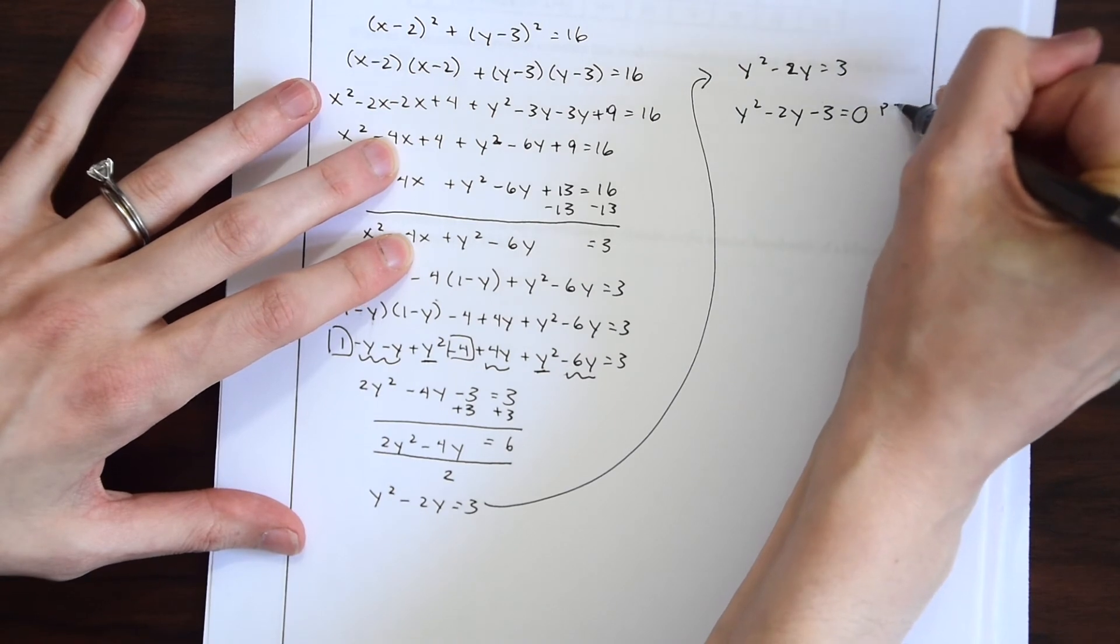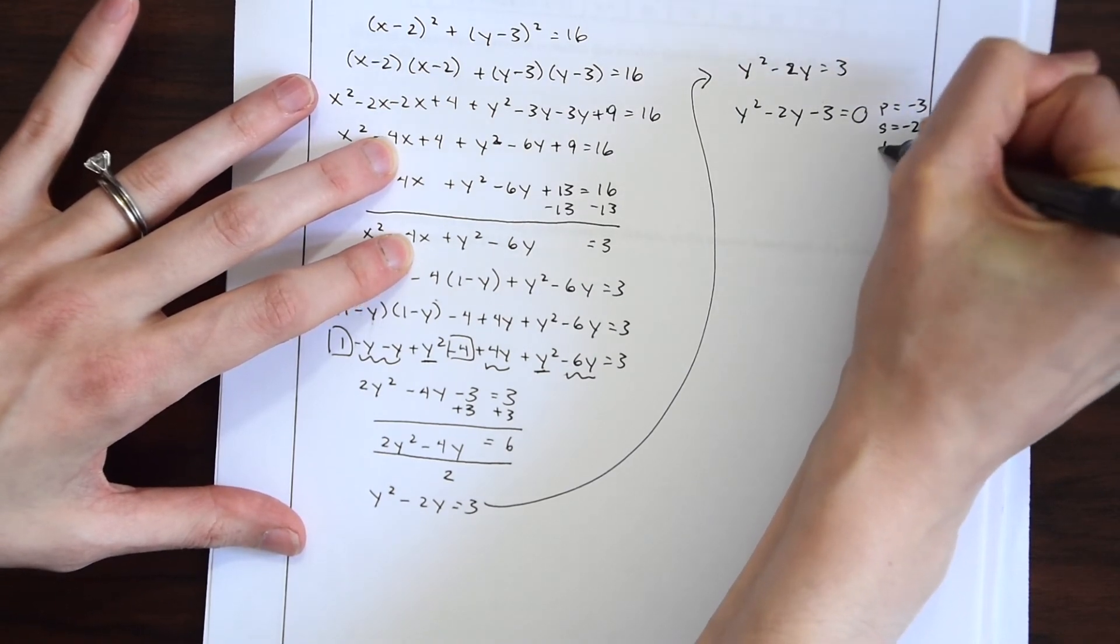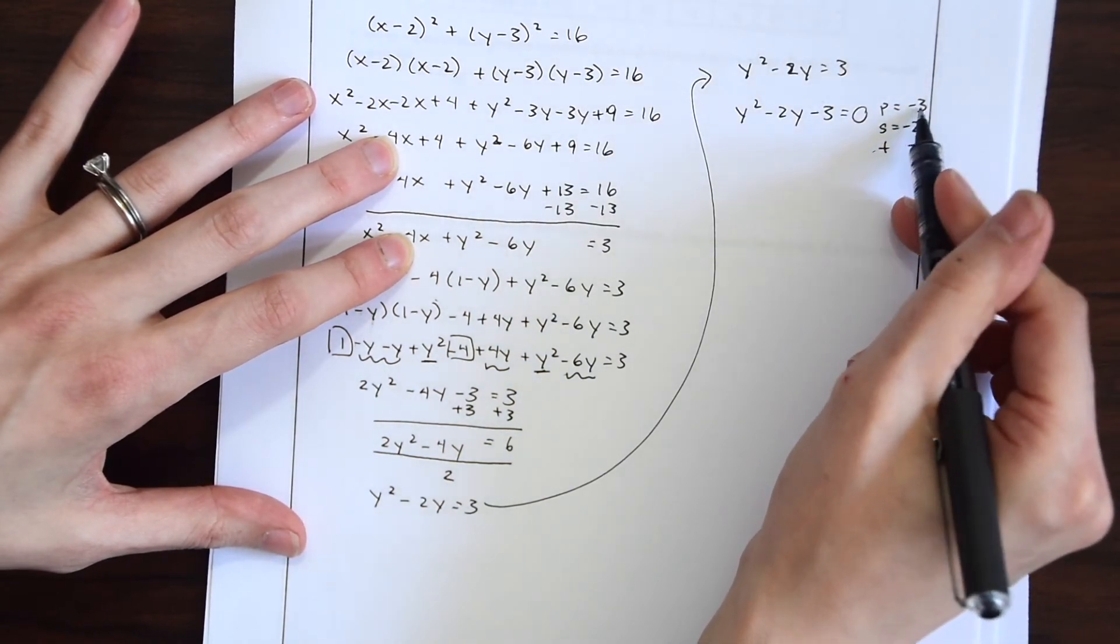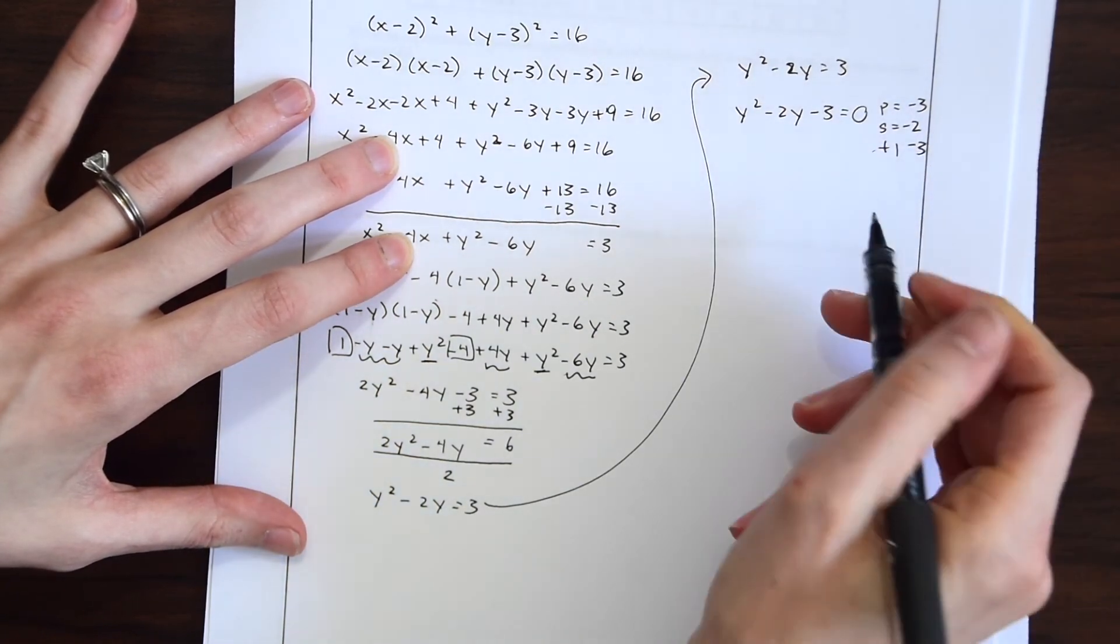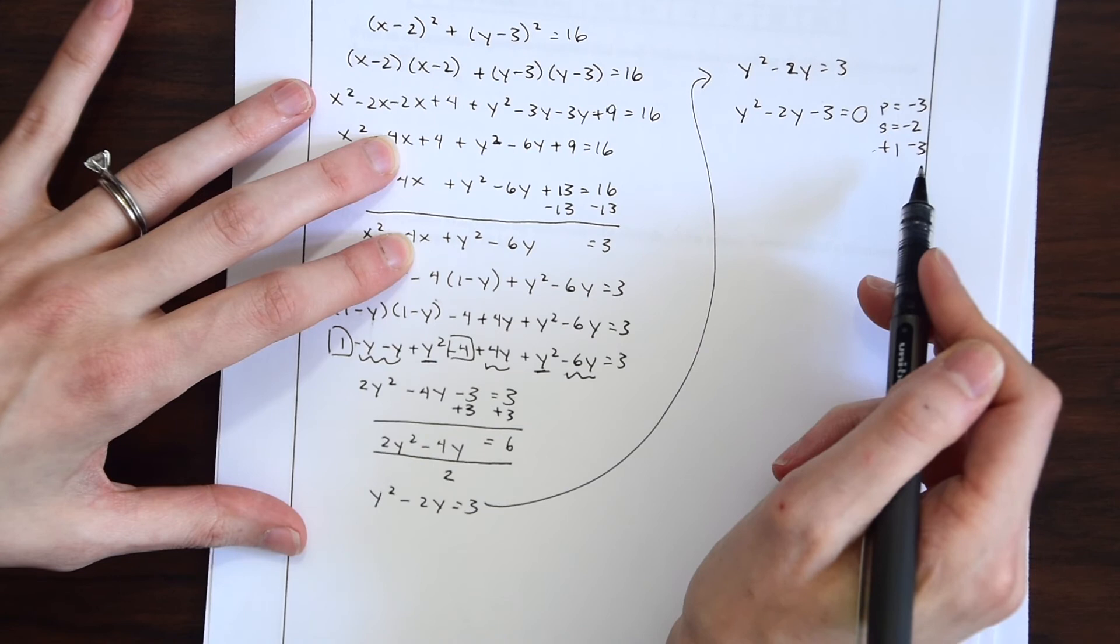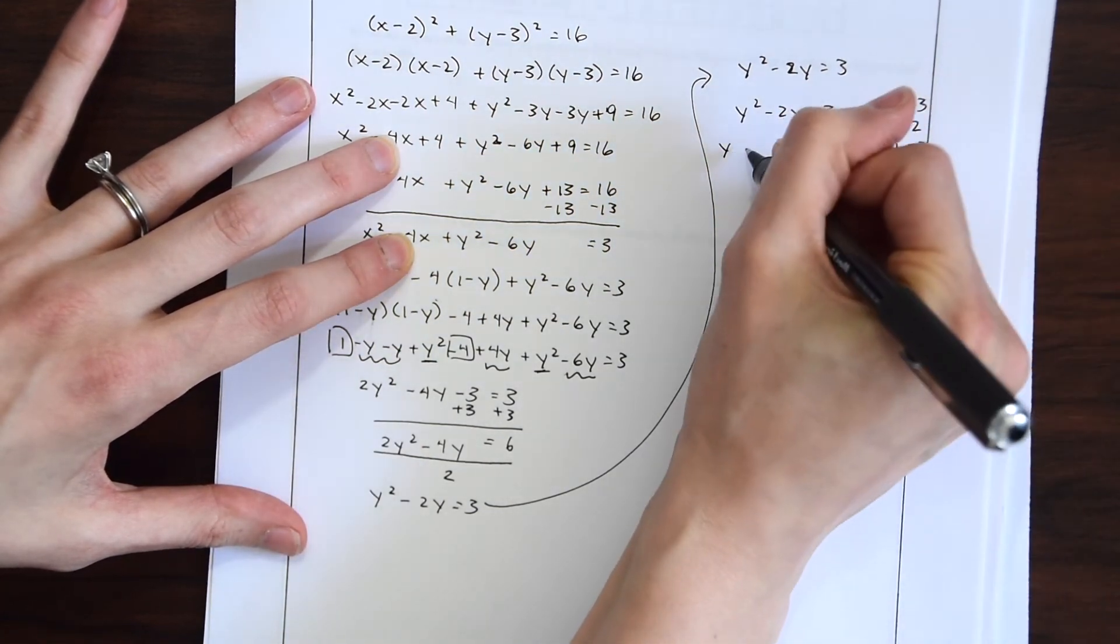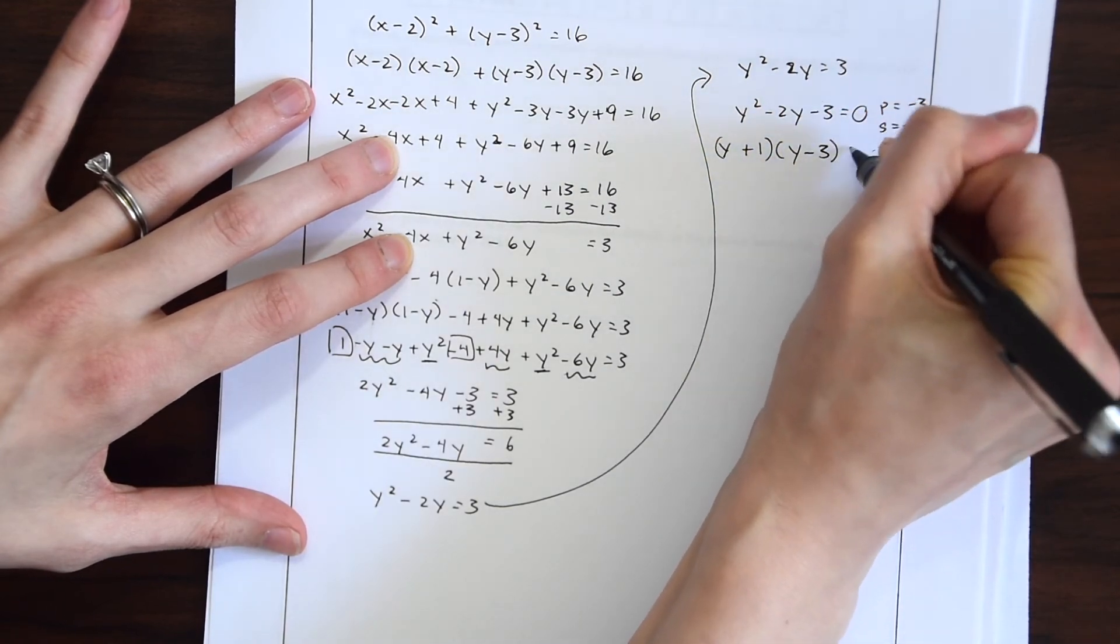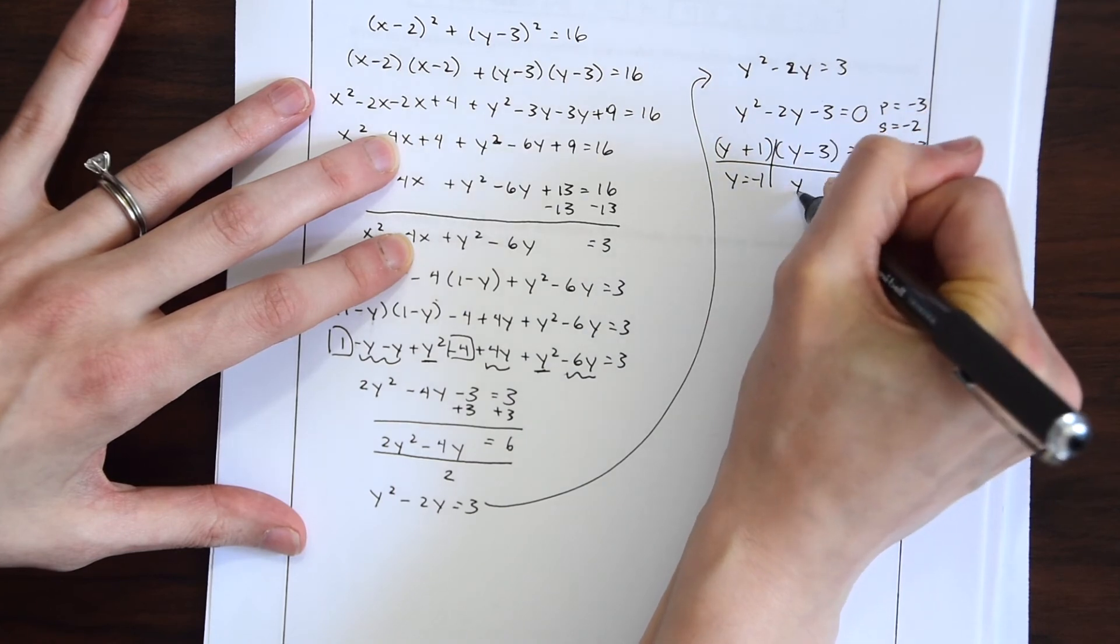And then just factor this using product sum. So p equals negative 3. S equals minus 2. And so two numbers that multiply to negative 3 and add to negative 2 would be negative 3 and 1. Because negative 3 times 1 is negative 3. And negative 3 plus 1 is minus 2. So now if we factor this y plus 1 and y minus 3 equals 0. We're going to get y equals negative 1 and y equals 3.